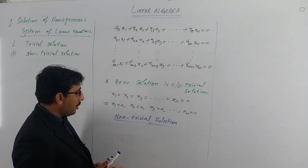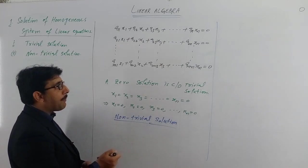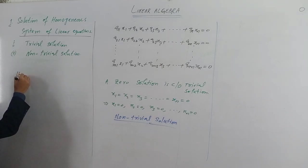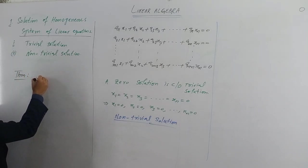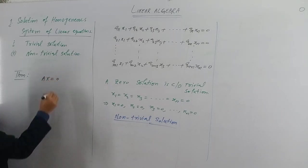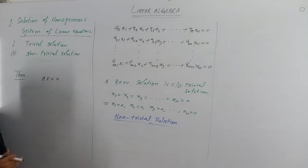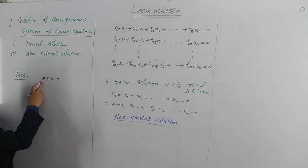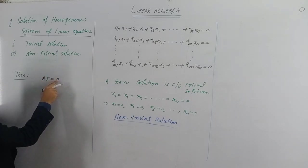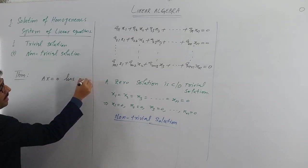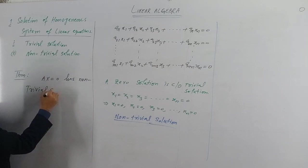Now there is a theorem. The theorem states that a homogeneous system of equations — represented as Ax = 0, where A is the coefficient matrix and x is the vector of unknowns x1, x2, x3, and the right-hand side is zero — always has a non-trivial solution.